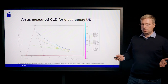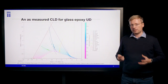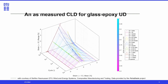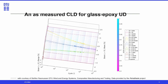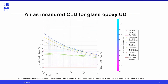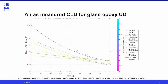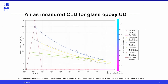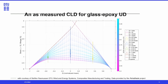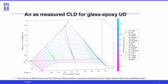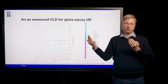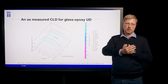Here we can see an animation of a real as-measured constant life diagram. The CLD is actually a 3D surface in a space where we plot vertically the range or amplitude, horizontally the mean stress, and on the third direction the number of cycles. The constant lifelines I showed schematically before are nothing else but contours or slices through that 3D surface.